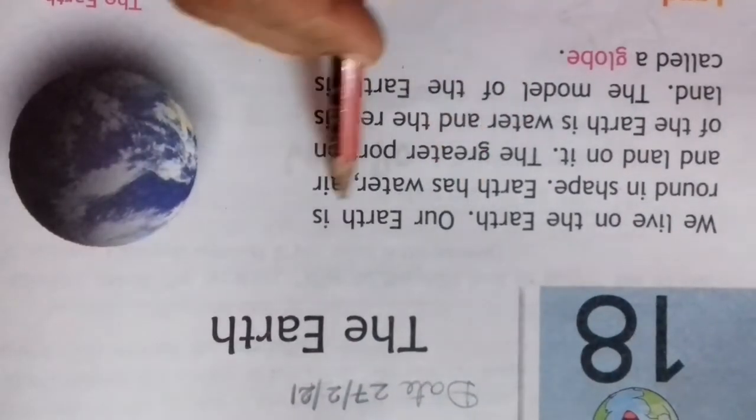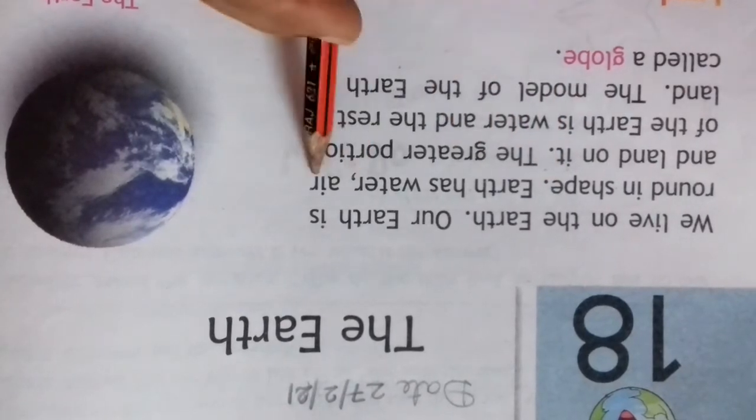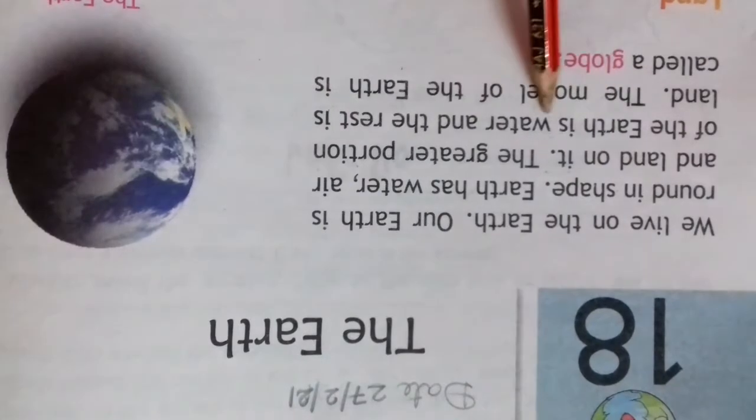We live on Earth. Our Earth is round in shape. Earth has water, air, and land on it. The greater portion of Earth is water and the rest is land. The model of Earth is called a globe.